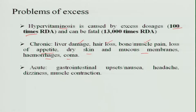Acute Vitamin A hypervitaminosis occurs when you take excess Vitamin A for a very short period. This leads to gastrointestinal upsets, nausea, headache, dizziness, and muscle contraction.